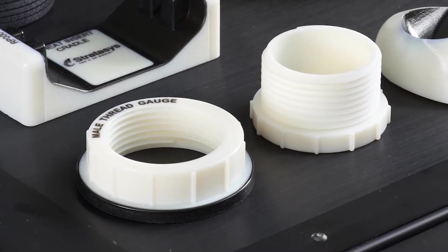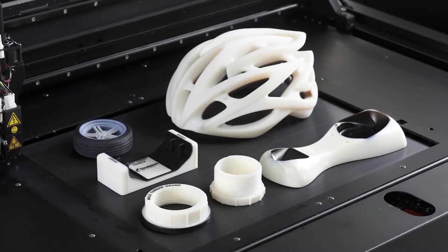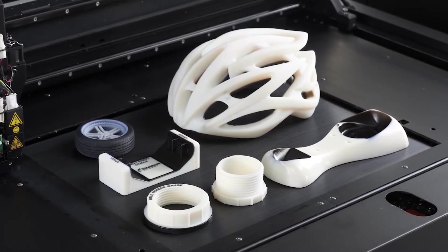The mixed tray mode prints several parts at one time, each made with a different material. This improves response time and operational efficiency.